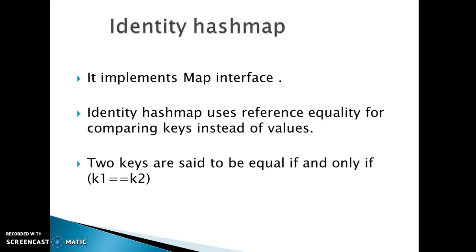IdentityHashMap implements the Map interface. IdentityHashMap uses reference equality for comparing keys instead of object values. It compares references using the == operator instead of the equals() method. But in the case of HashMap, keys are compared using the equals() method, not the == operator.